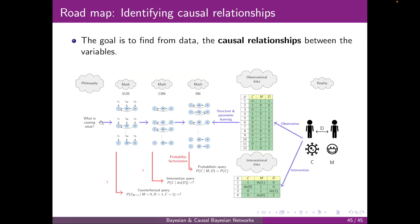To summarize: from the intuitive notion of causality, we obtained SCMs, which can answer counterfactual, intervention, and probabilistic queries. From SCMs we can get CBNs, which can answer intervention queries in particular. And from there we get Bayesian networks, which can answer probabilistic queries. We already covered intervention queries; we will get to the case with latent variables, and then in the next chapter we will address counterfactual queries.